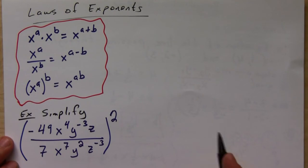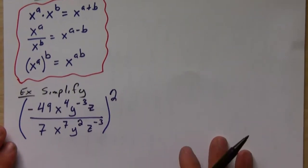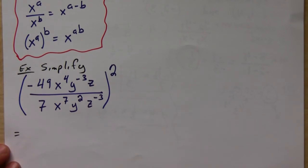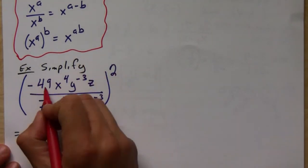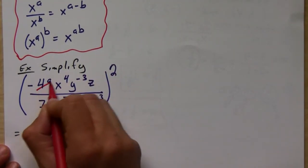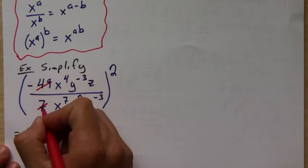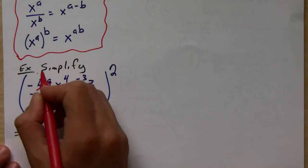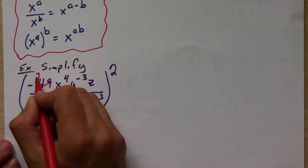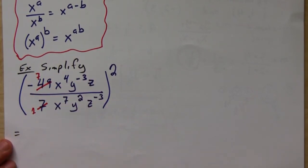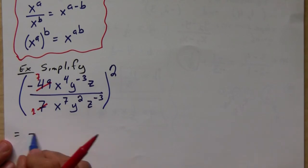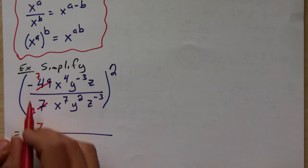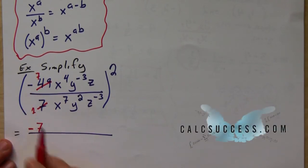I think for this particular problem it's easier to simplify the inside first. So we can simplify the numbers first: forty-nine and seven leaves me with seven on top if I divide those two, one on the bottom. Let's put that down: seven, and we're going to keep the negative sign.